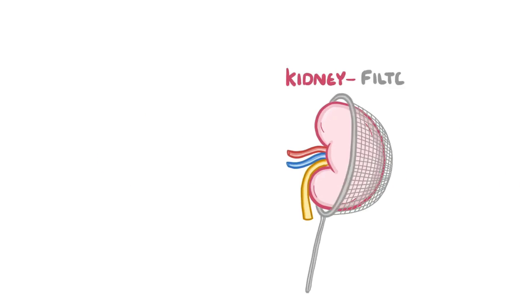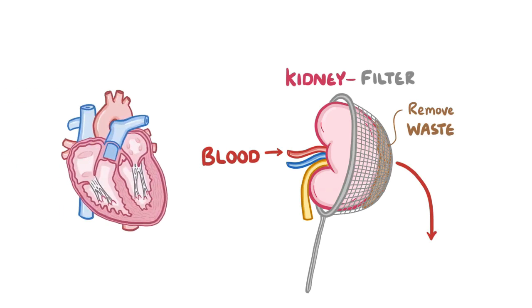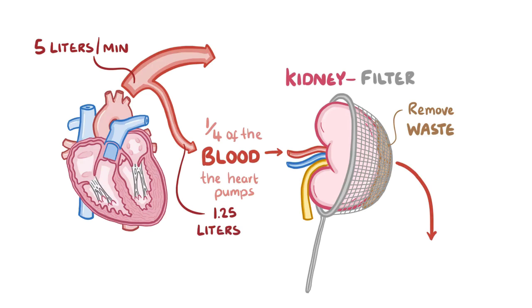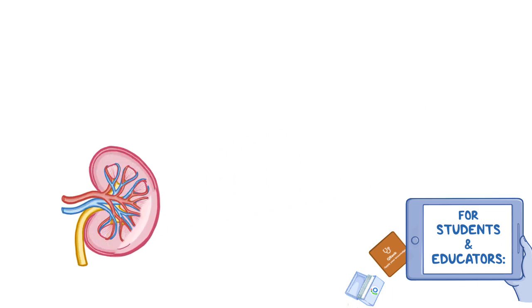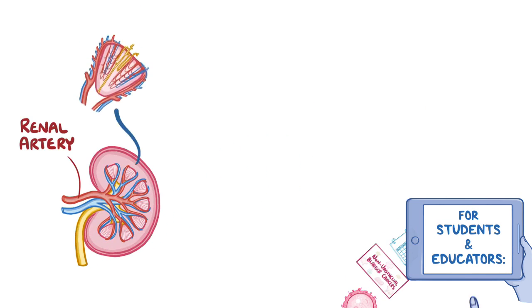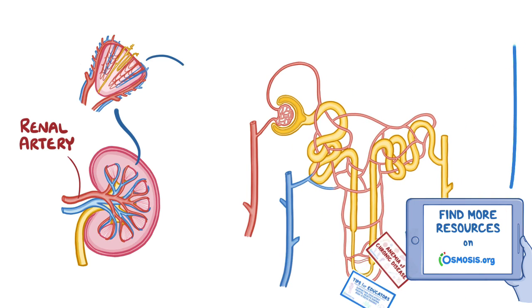The kidney's main job is to filter the blood to remove waste, so it shouldn't be surprising that they receive about a quarter of the blood that the heart pumps with each beat. On average, the heart pumps out almost 5 liters of blood every minute, so one quarter of that — about 1.25 liters — flows into the renal artery every minute.